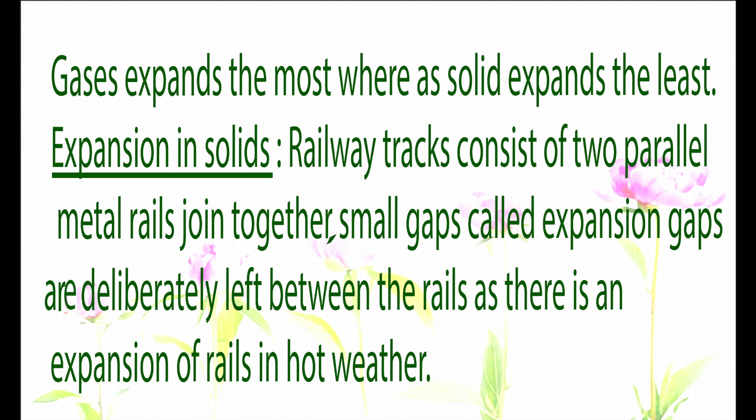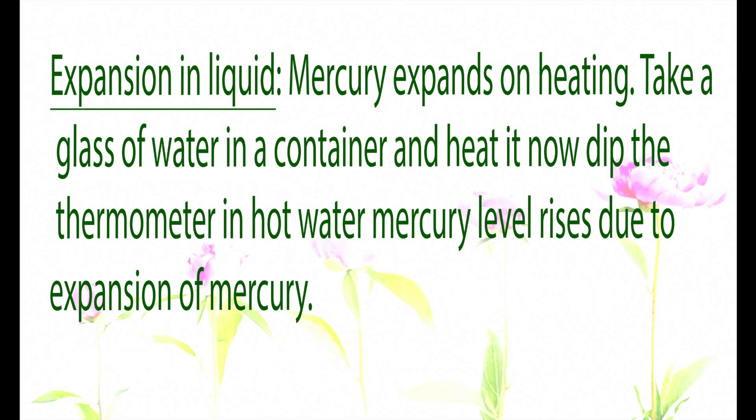Expansion in solids: railway tracks consist of two parallel metal rails joined together. Small gaps called expansion gaps are deliberately left between these rails, because the rails expand in hot weather. These gaps ensure that the track does not get damaged when the metal expands and accidents can be avoided. In liquids, mercury expands on heating.